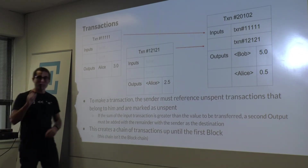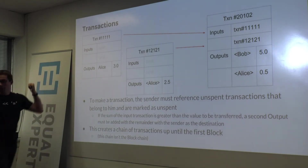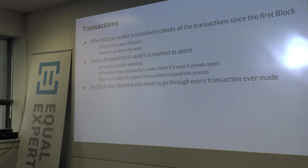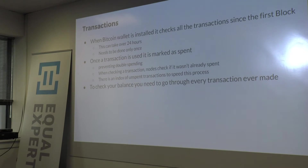This creates a chain of transactions — not a blockchain — going back to the beginning of time, where money was first generated. When you install the Bitcoin wallet on your machine, it can take up to 24 hours to check every single transaction ever made, and the longer you wait, the more time it takes as more transactions accumulate. Your node downloads all transactions from other nodes and validates them itself.